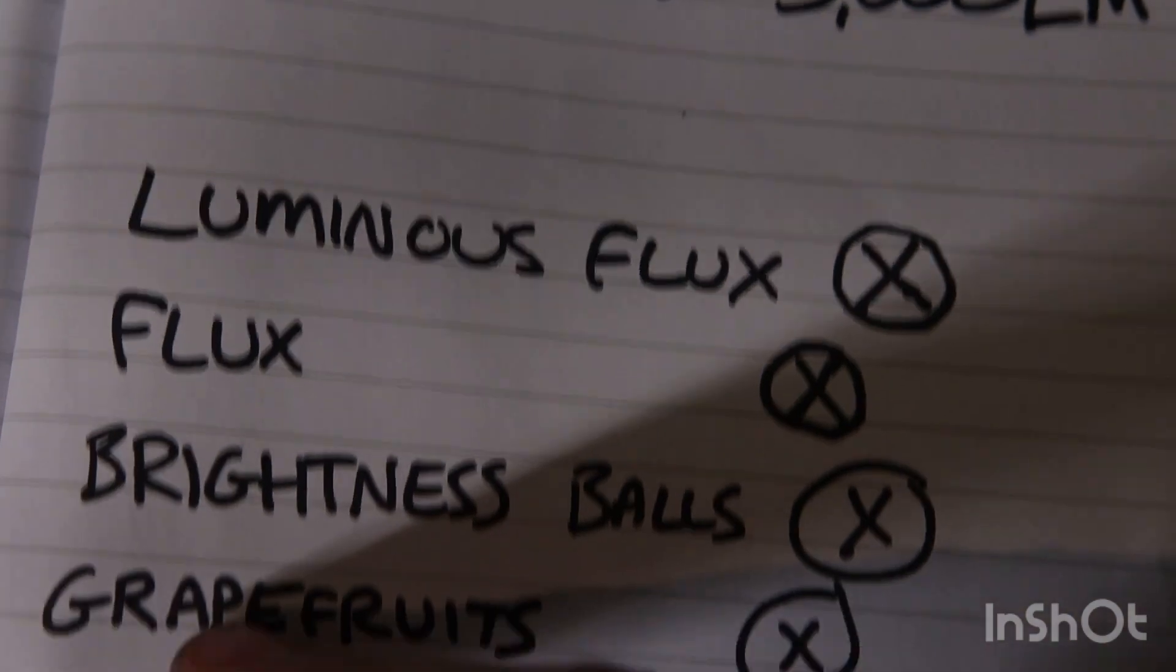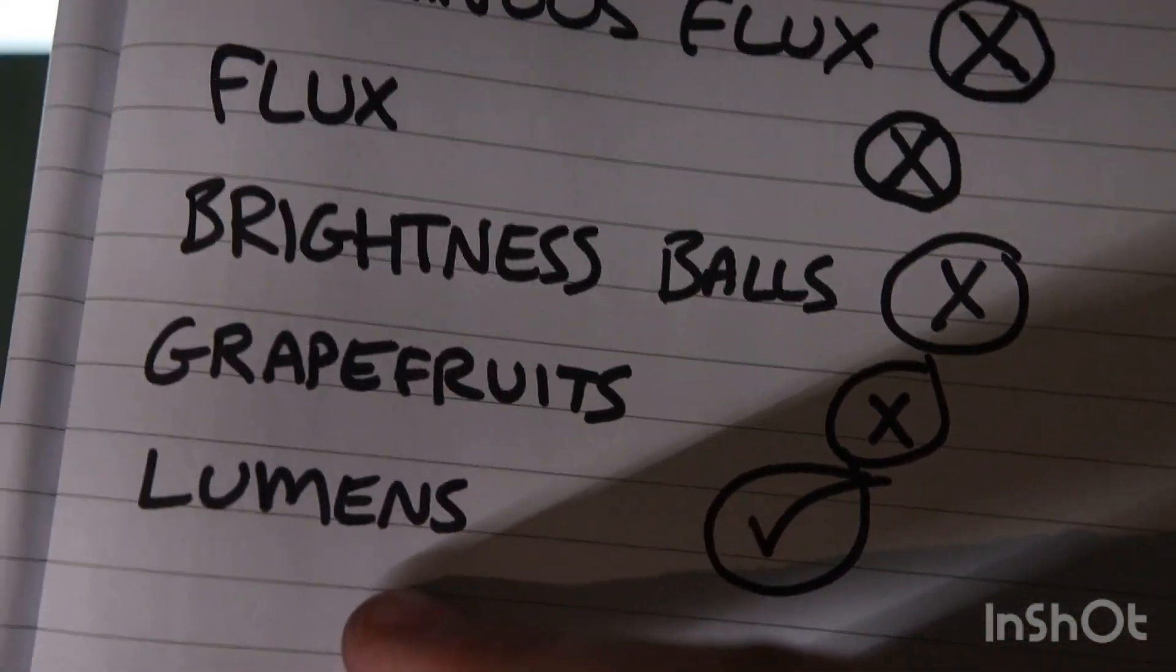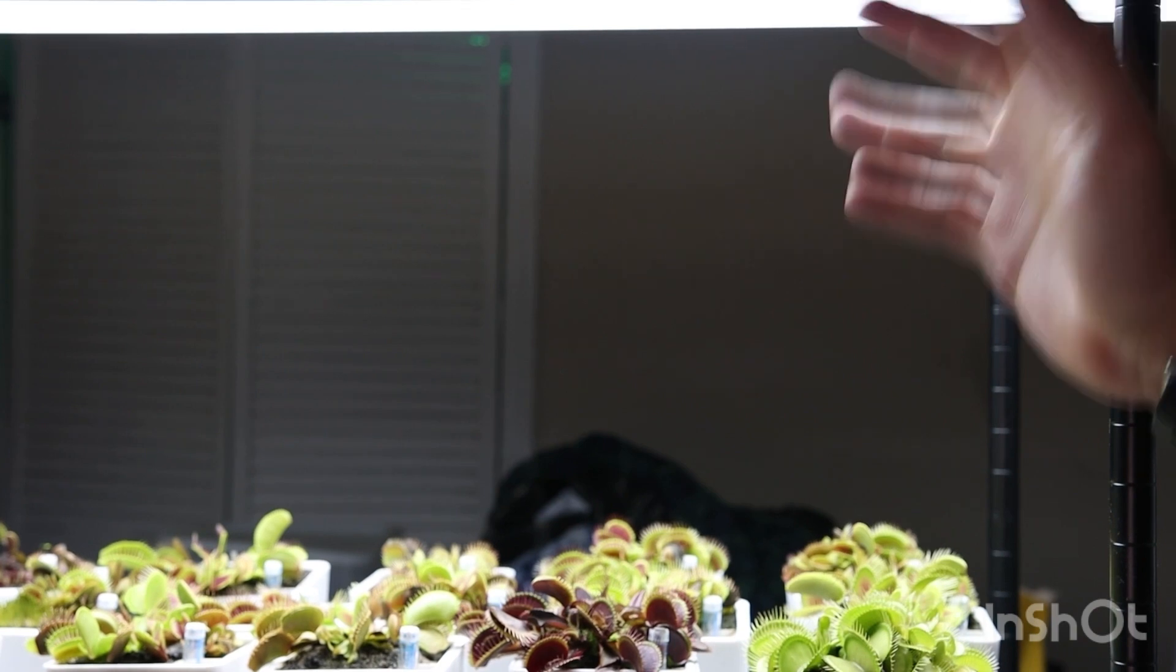4,000 grapefruits. Like that doesn't mean anything. Lumens. Lumens is what you want. That's what means everything to us. So we have what temperature color lights we want. Now the intensity.